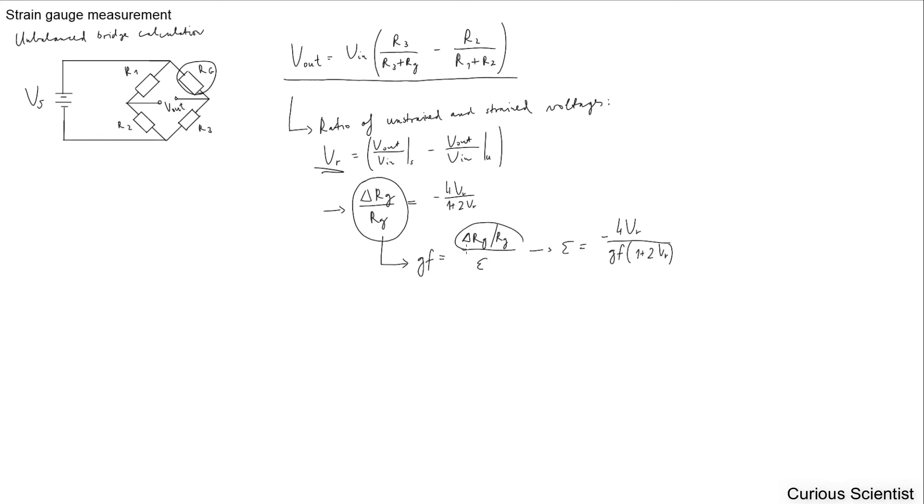We know this and we also know this. We just flip our equation and divide by GF and multiply by epsilon. We get our final formula where the epsilon, the strain, can be expressed as minus four times Vr divided by the gauge factor times one plus two Vr. That's how you get the strain when you use your strain gauge in an unbalanced bridge. This is the very simple formula.